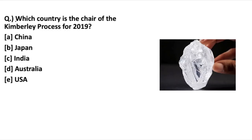Which country is the chair of the Kimberley Process for 2019? There are five options: China, Japan, India, Australia, and USA. Out of these options, option C — India — is the right answer. India is the chair of the Kimberley Process for 2019.